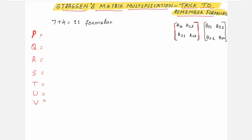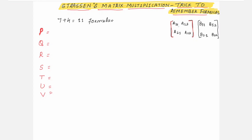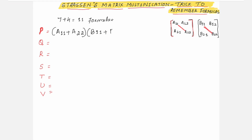First, we are going to write it for P. What you do is, you just refer to the first matrix: A11 and A22 — the diagonal elements. First, see which elements are diagonally placed. Here it is A11 and A22. So you write down A11 plus A22. The other part of the formula is you multiply this with B11 plus B22 — those are the two diagonal elements of B. So this completes the formula for P.